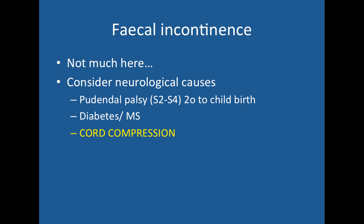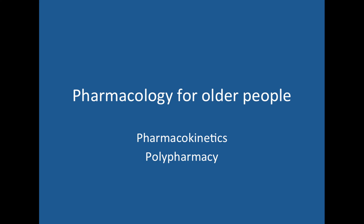Moving on to faecal incontinence: the important thing is to rule out cord compression. Cauda equina is an emergency requiring urgent MRI imaging and neurosurgical referral — this applies in urinary incontinence too. Another cause is pudendal palsy, which can occur after traumatic childbirth. The pudendal nerve is S2 to S4. Diabetes and demyelinating disorders are also causes.